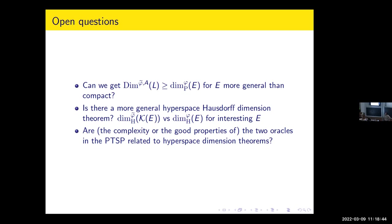The last question is trying to learn more about the oracles in the point-to-set principle. If we cannot do it in general, one strategy is to classify sets for which these oracles are nice, or relate the oracle to the set. Another approach is like Stull's — he wanted to know more about Marstrand's projection theorem and looked at the oracles for that particular theorem. So let's maybe look at the oracles for the hyperspace dimension and see if we can learn more about the problem by studying the oracle structure. Well, I think this is it. Thank you very much.